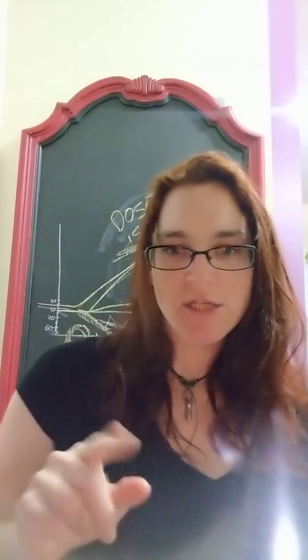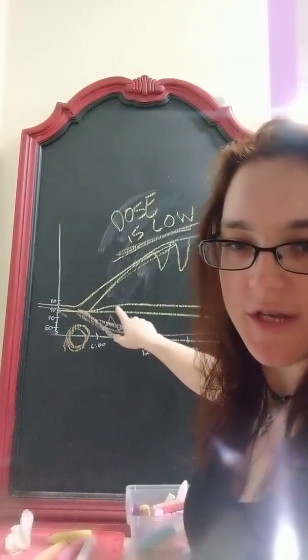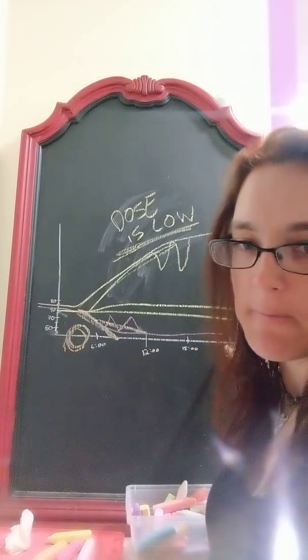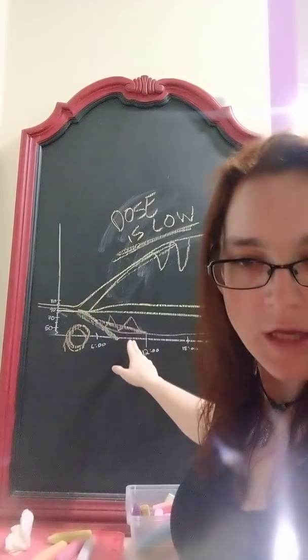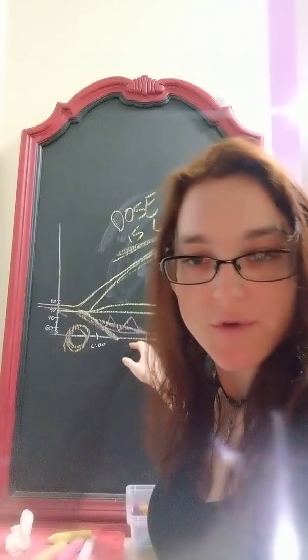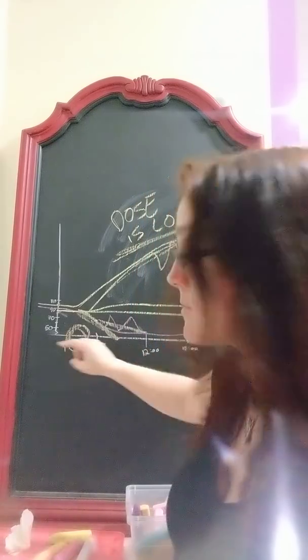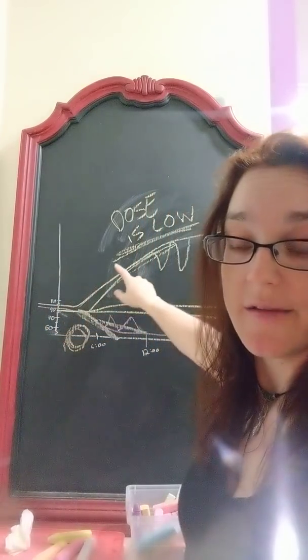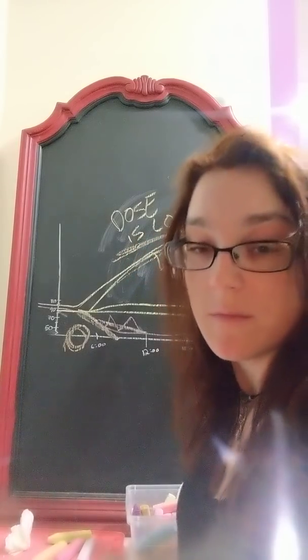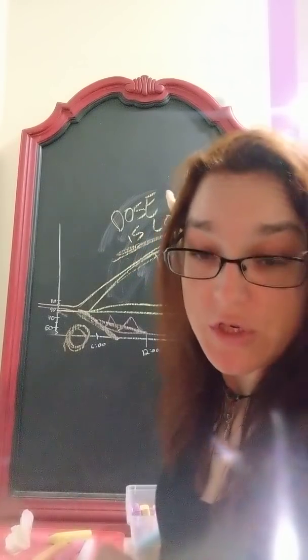In summary: your basal rate should keep you nice and flat along that green line. If you drop low and keep dropping no matter how much glucose you eat, your dose is too high — lower it. If you start to rise and corrections don't keep you down, your dose is too low — raise it.